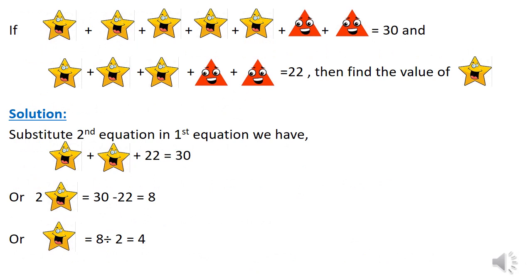If 5 stars plus 2 triangle equal to 30 and 3 stars plus 2 triangle equal to 22, then find the value of star.